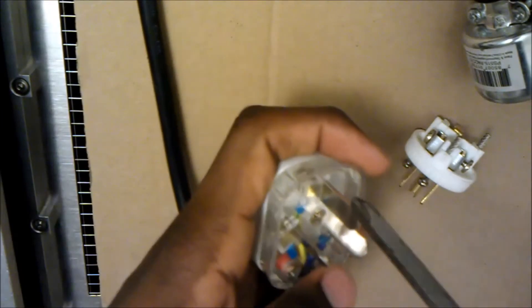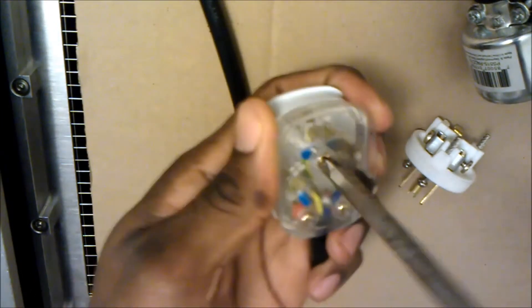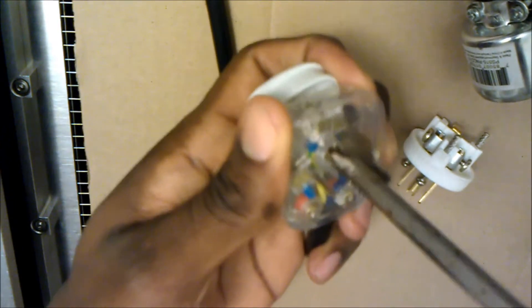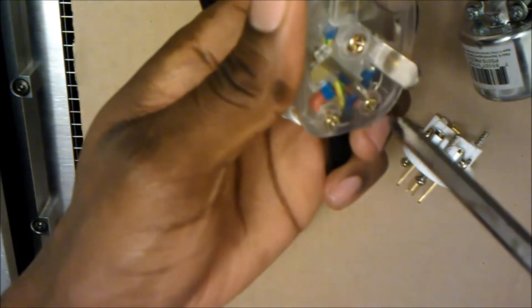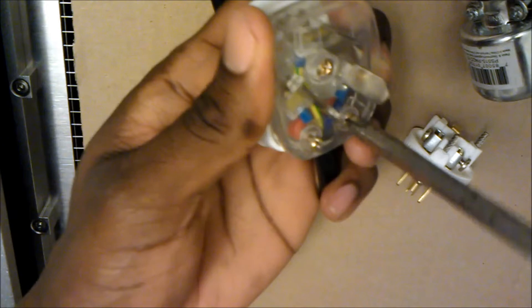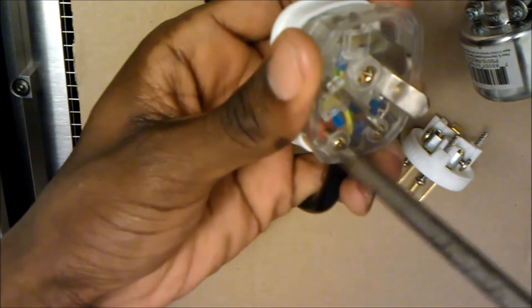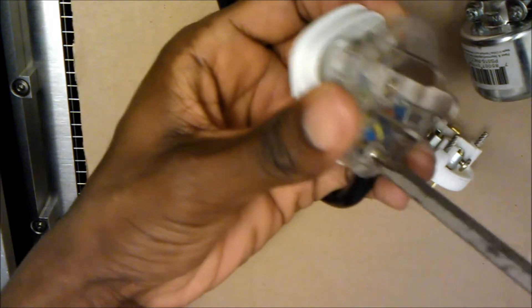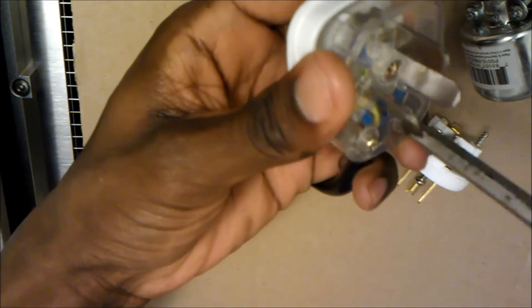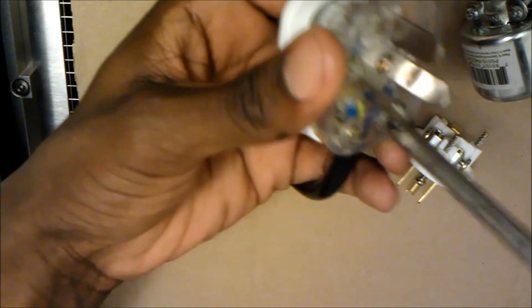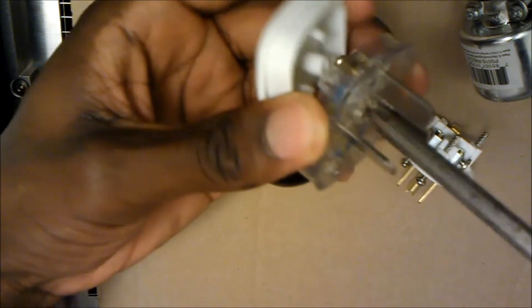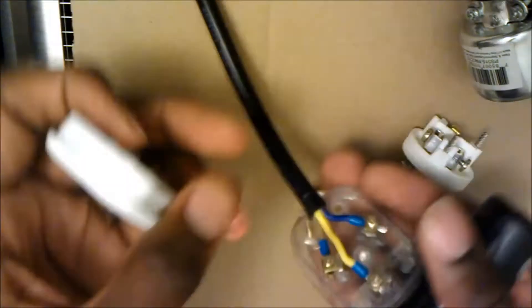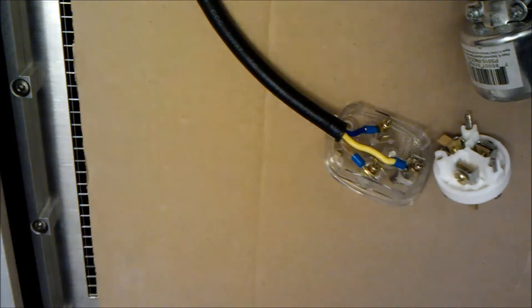So the only things that you really need to remember is your colors. Your brown is your hot, your blue is your neutral, and your green and yellow is your ground. I mean every place might be a tad bit different, but that's basically most of the gist of it. Sometimes I believe ground is black if you're doing like a two prong, but I mean everything is different. I had to do a little bit of research to find that.